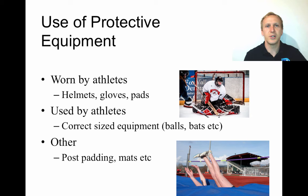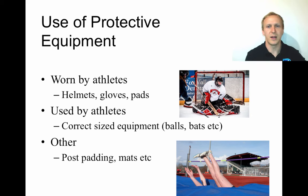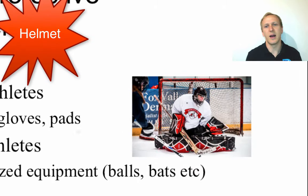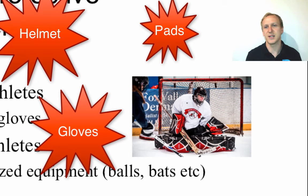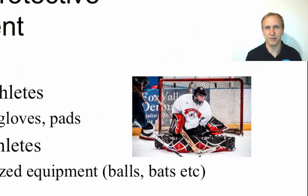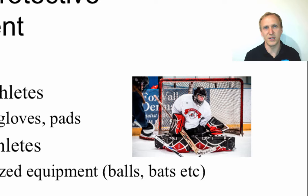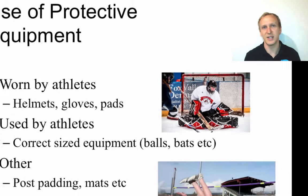A lot of sports use protective equipment, most of which is worn by athletes. In ice hockey, the goalkeeper has helmets, gloves, pads, a stick, a grate over his face, and a neck protector — everything to ensure he's protected because he has pucks hit at him at high velocities. Without padding, he's much more likely to get injured.